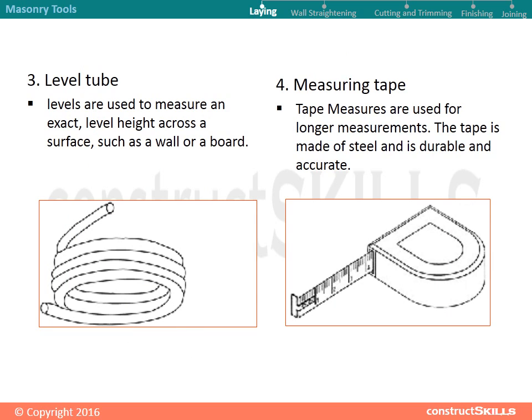Laying tools: level tube. Levels are used to measure an exact level height across a surface, such as a wall or a board. Measuring tape — tape measures are used for longer measurements; the tape is made of steel and is durable and accurate.